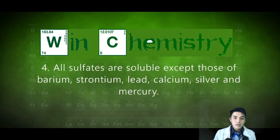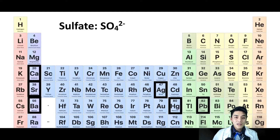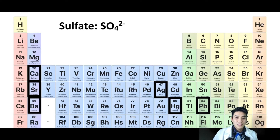Rule four: all sulfates are soluble except those of barium, strontium, lead, calcium, silver, and mercury. Anything with sulfate will dissolve unless it's combined with one of those six elements boxed in black.